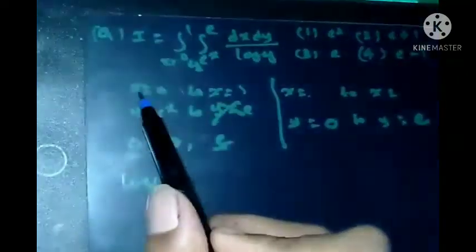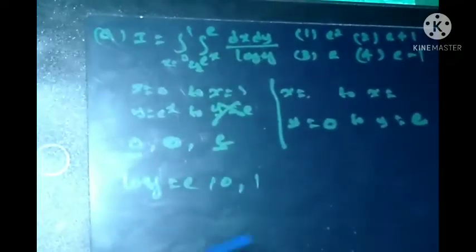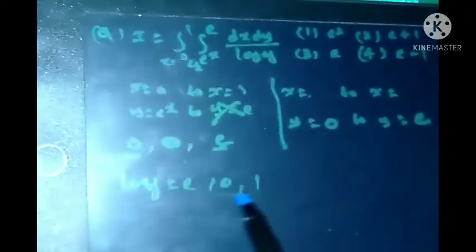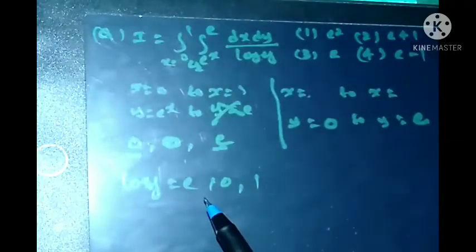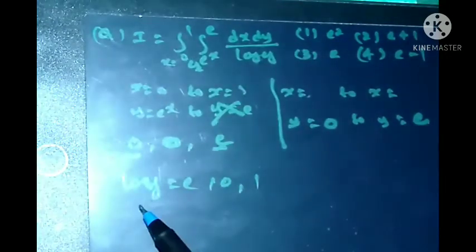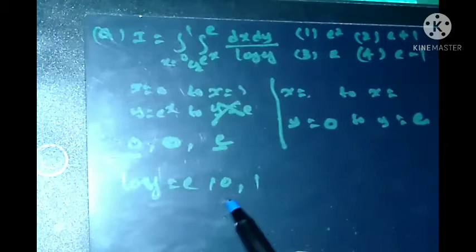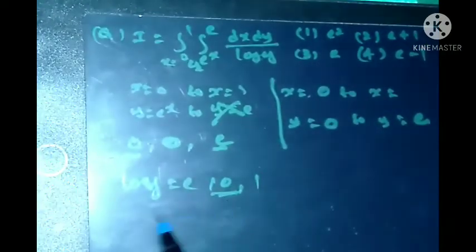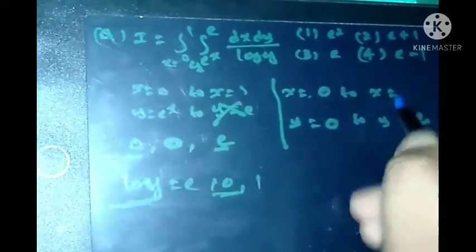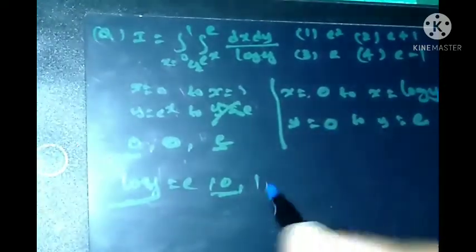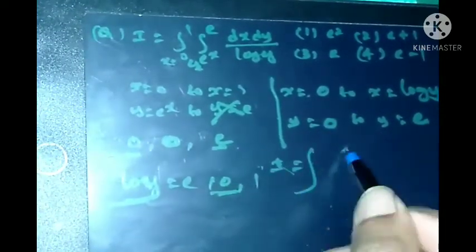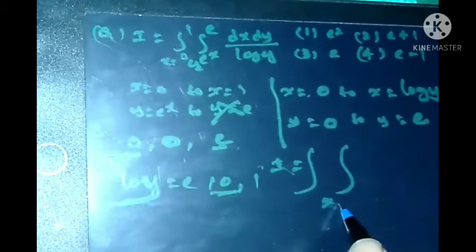Among this, which one of the value is lower? 0 is the lower, write it down here. And which one of the value is upper? log y. Write it down here. Now this is the change of order of integration.